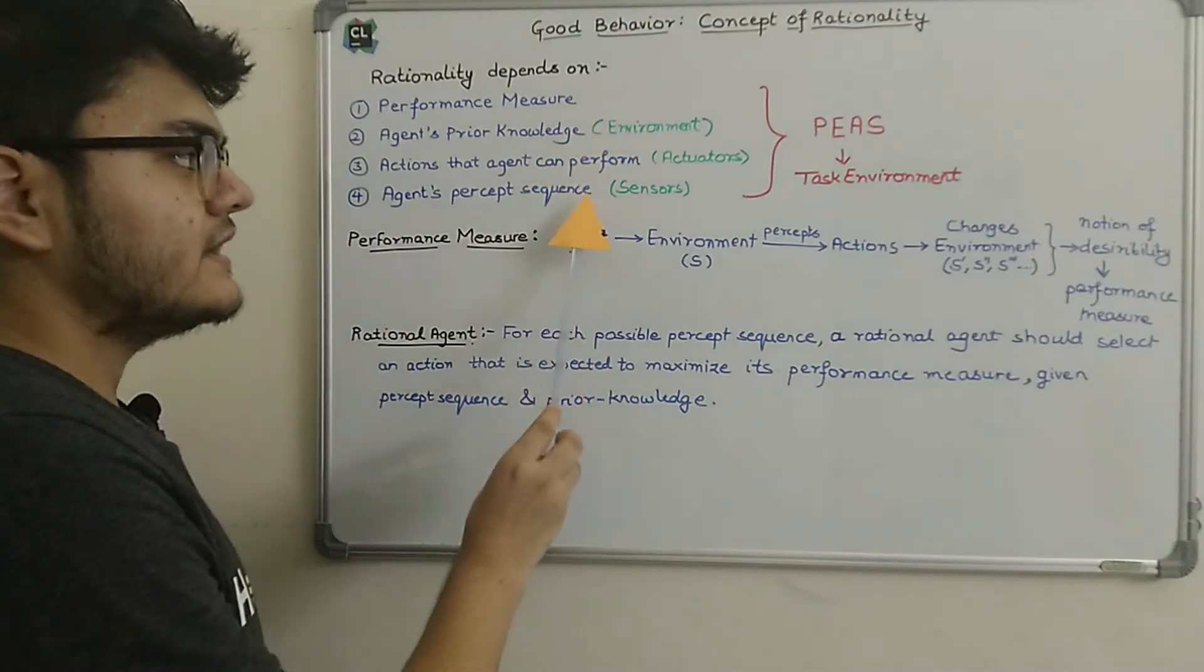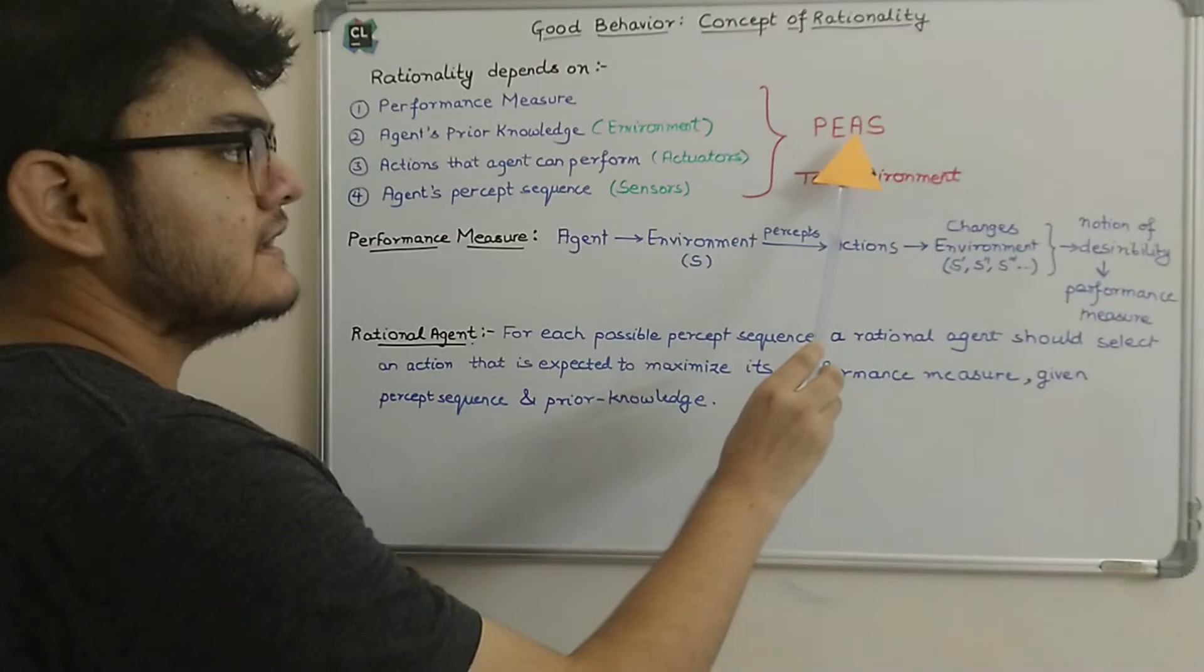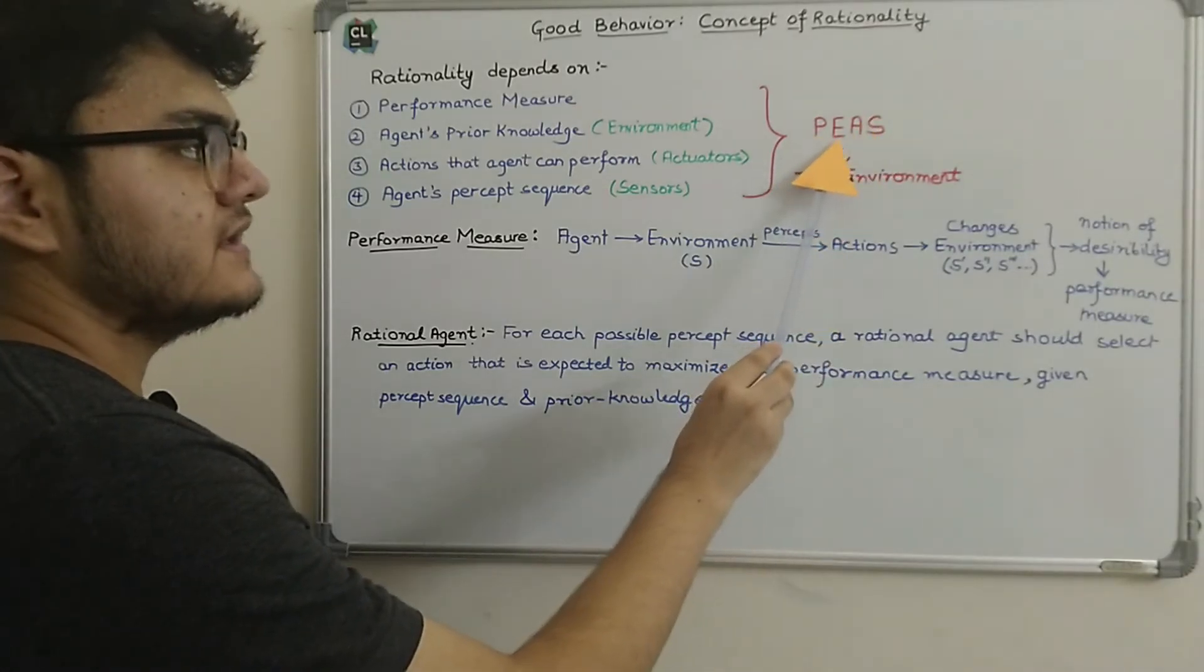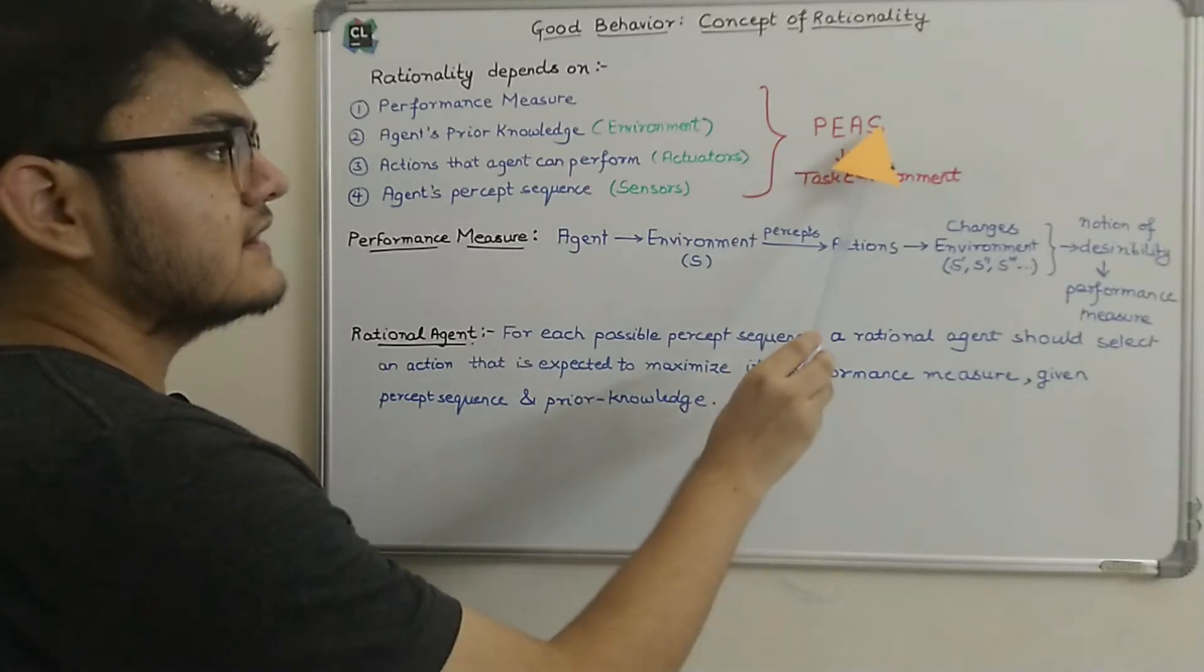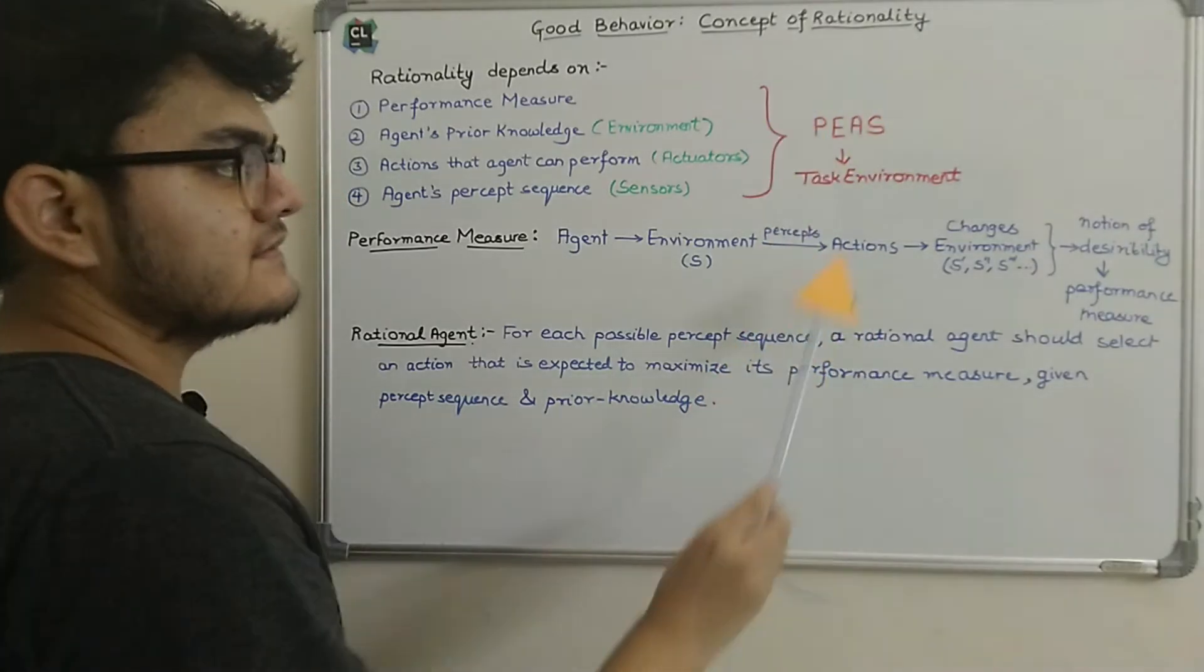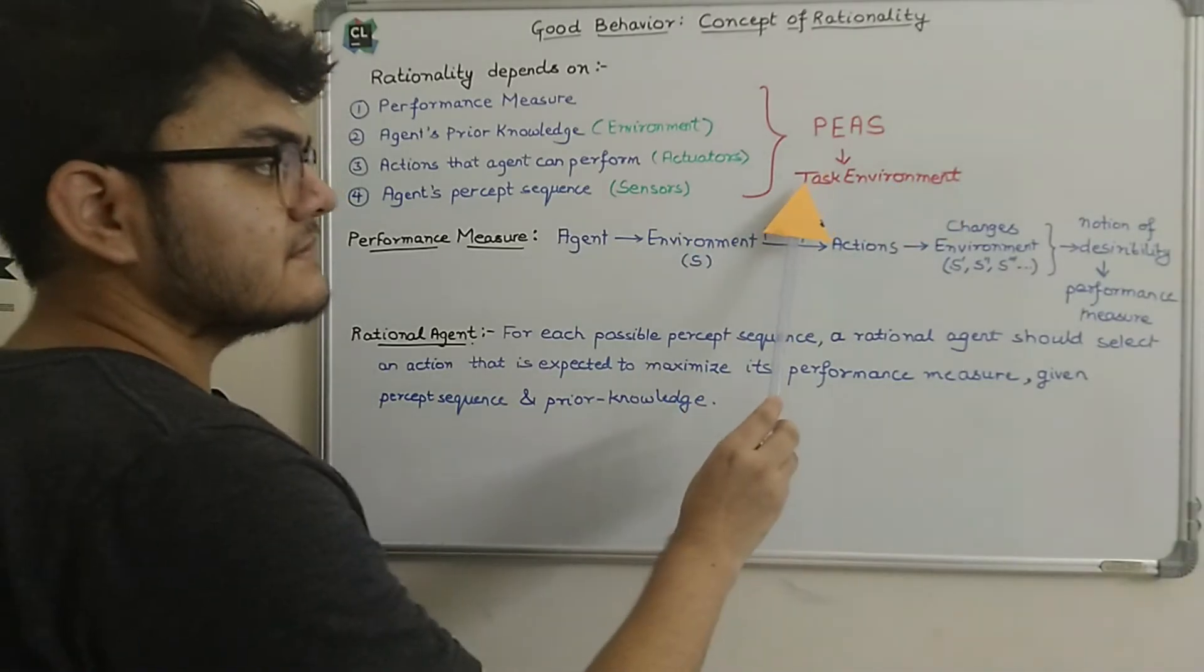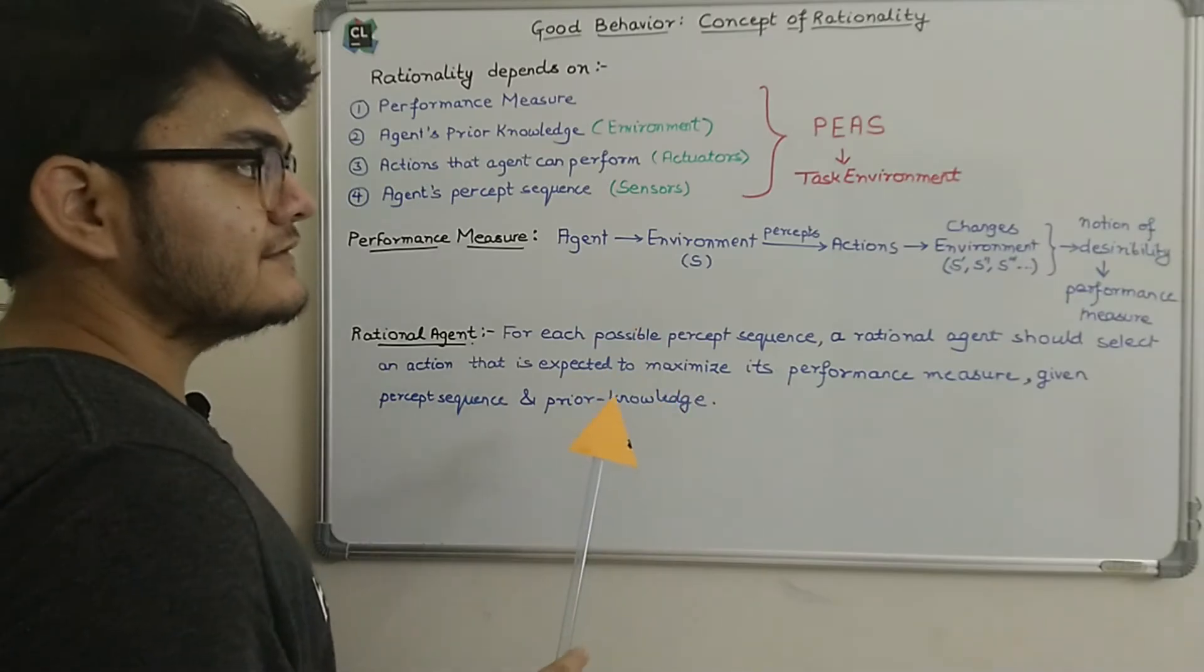So all these four points, we can write them as PEAS: P, E, A, S. P means performance measure, E means environment, A means actuators, and S means sensors. Collectively, we call all of these dependencies as the task environment. We will discuss about the properties of task environment in the further coming tutorials.